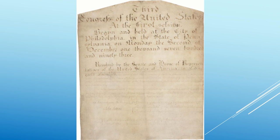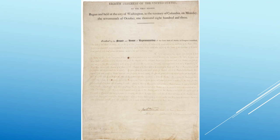In 1793, the Supreme Court angered the states by accepting jurisdiction in a case where an individual sued the state of Georgia. To ensure that didn't happen again, Congress and the states ratified the 11th Amendment to the Constitution in 1798 — it took them five years to do that. The 12th Amendment, ratified in 1804, had electors vote separately for president and vice president. Until that point, the candidate with the most electoral college votes became president, and the runner-up became vice president, which could wind up being an issue where the president and vice president are completely opposing parties.